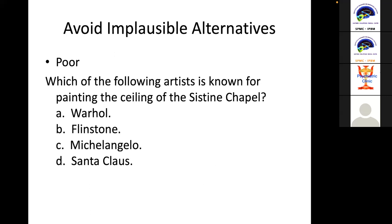Avoid implausible alternatives — choices that are automatically ruled out by common sense. For example: 'Which of the following artists is known for painting the ceiling of the Sistine Chapel? A, Warhol; B, Flintstone; C, Michelangelo; D, Santa Claus.' Except for Michelangelo, the rest are implausible — Flintstone is a cartoon character and Santa Claus is a mythical figure. These alternatives are not serious distractors.